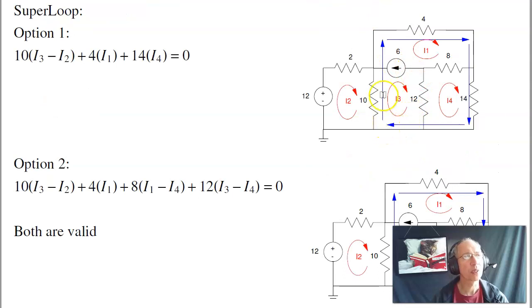So one option is the super loop. I'll go around this path and sum those voltages to zero. That equation would be 10(I3 - I2) plus 4I1 plus 14I4, and then back where I started, equals zero.